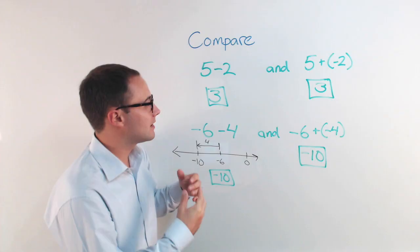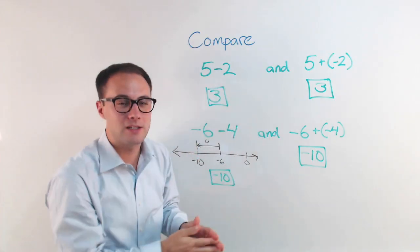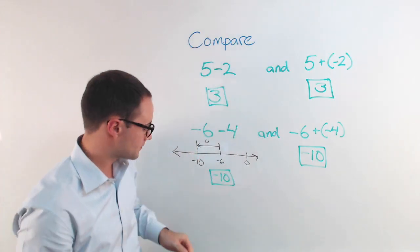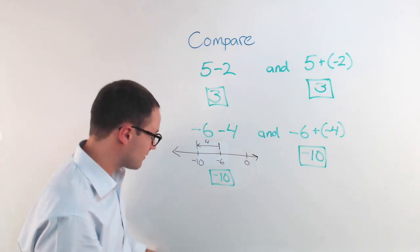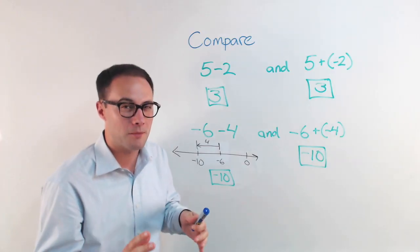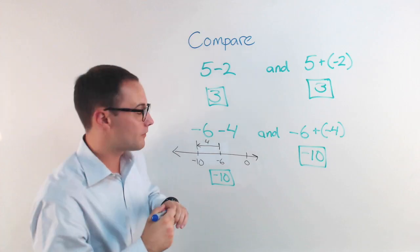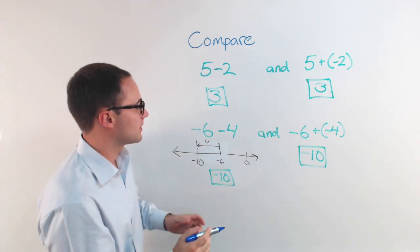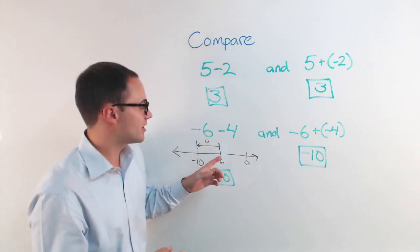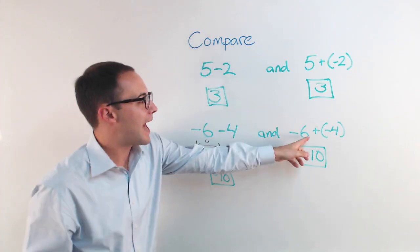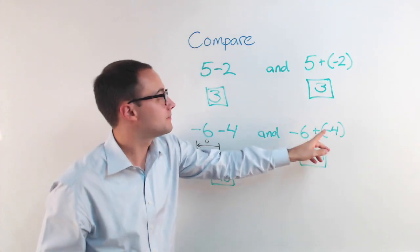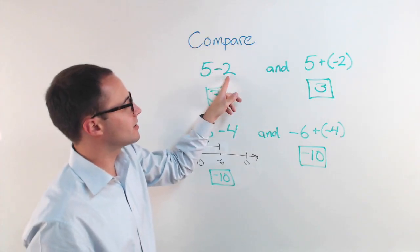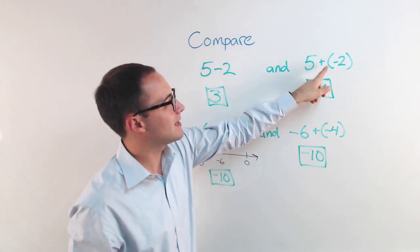So, let's see if we can, with this information, if we can make a rule. And hopefully you might, if you want to pause and see if you can come up with your own rule, go for it. But our rule for this, when you're subtracting integers, subtracting an integer is the same as adding its opposite. Subtracting an integer is the same thing as adding its opposite.